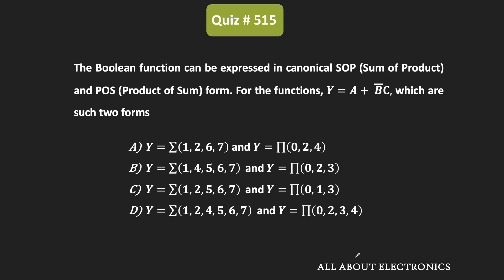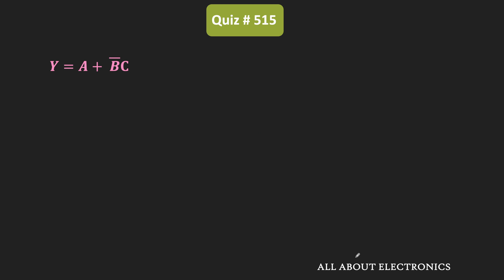For the given function Y, we have been asked to find which of the following are the correct SOP and POS forms. The function Y is given as Y = A + B̄C. To find the respective canonical SOP and POS forms for this function...